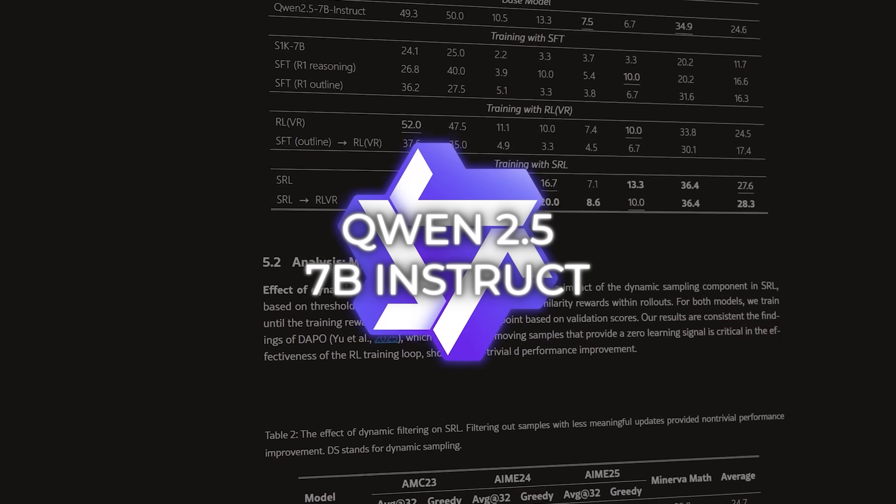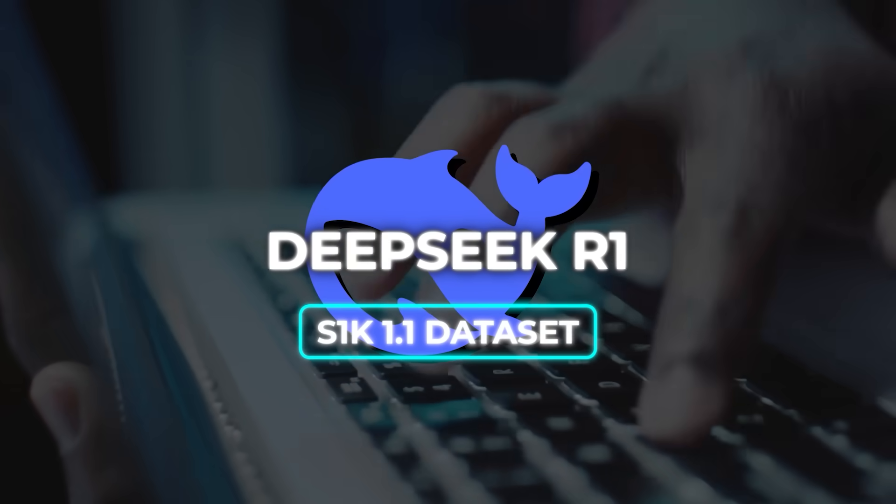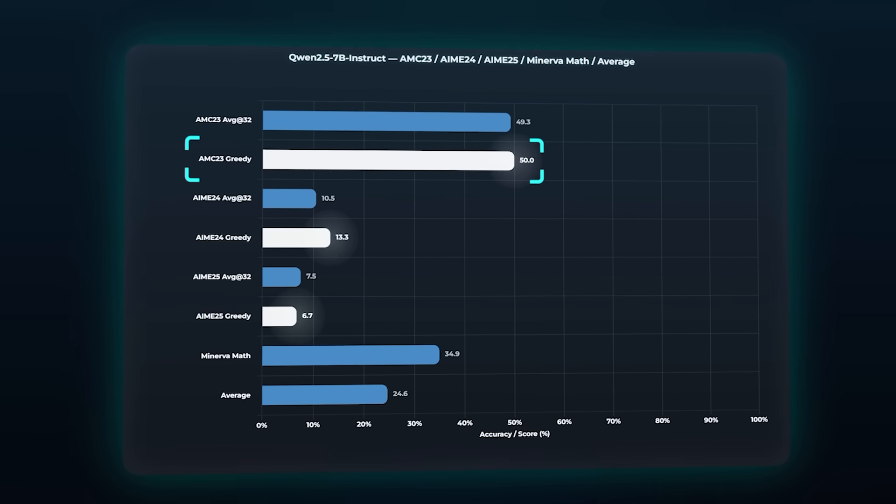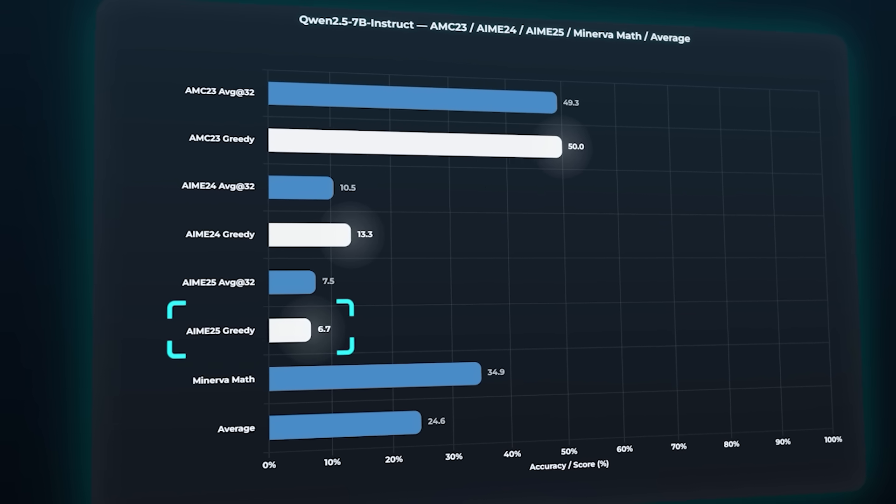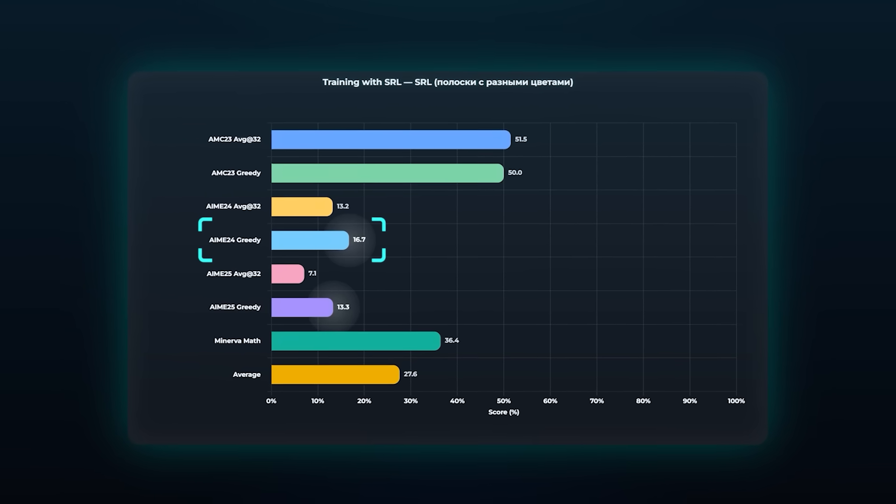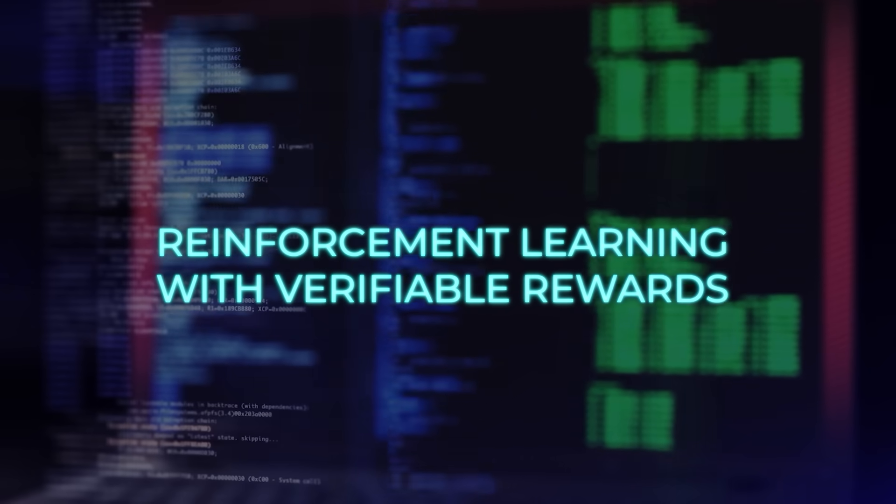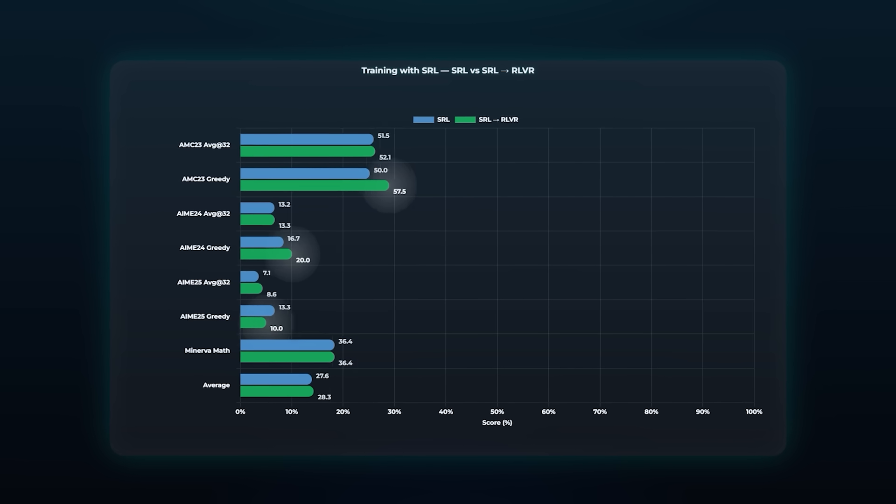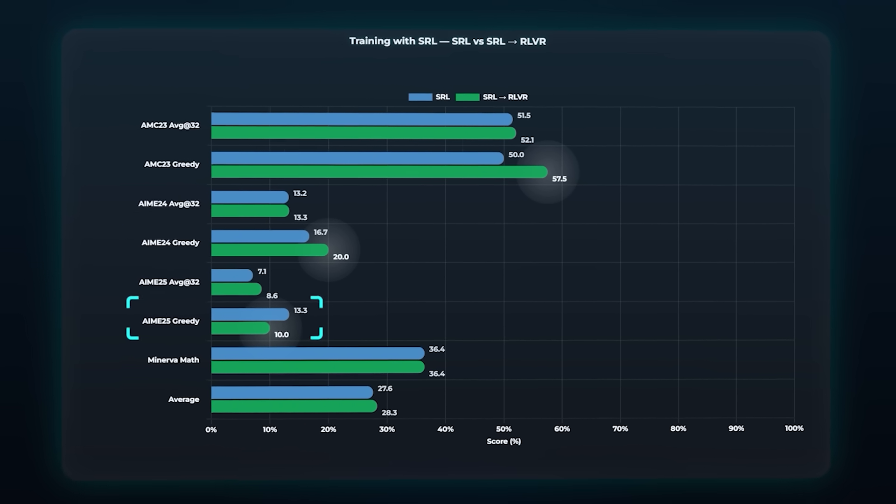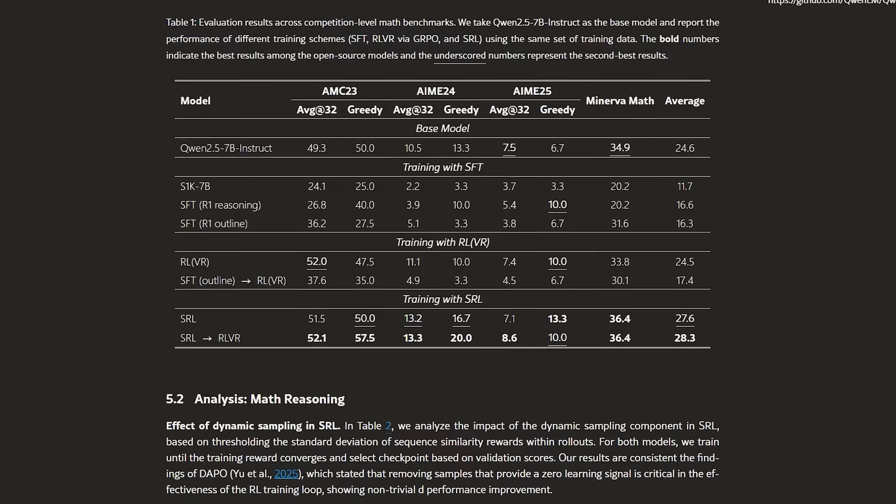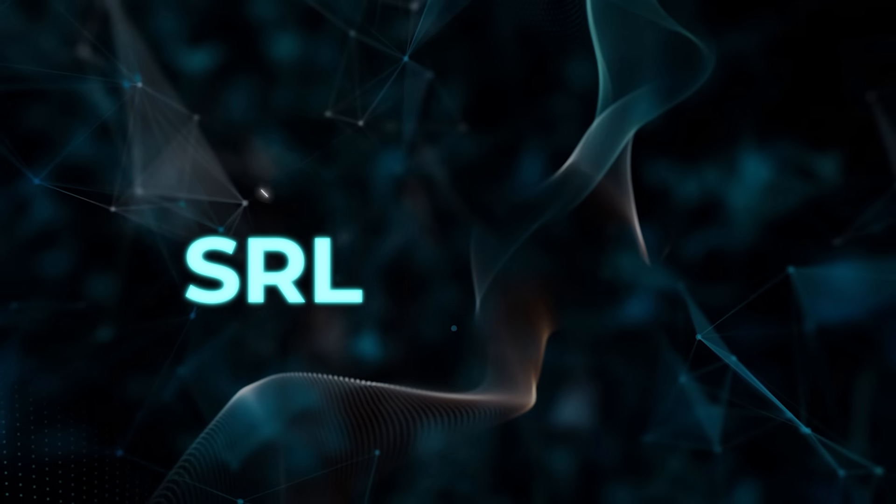All tests were done on Qwen 2.5 7B Instruct using the same DeepSeek R1 formatted S1K1.1 dataset. Baseline scores were AMC 23 50.0, AIME 24 13.3, AIME 25 6.7. After SRL training, AIME 24 jumps to 16.7, AIME 25 to 13.3. Then they run RLVR, reinforcement learning with verifiable rewards, after SRL, and it explodes. AMC 23 57.5, AIME 24 20.0, AIME 25 10.0. That's actually the highest open source result in the research right now, and the authors are crystal clear. The winning recipe is SRL first, then RLVR.